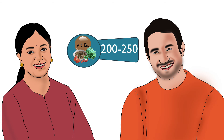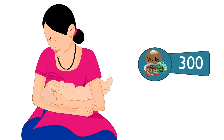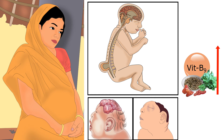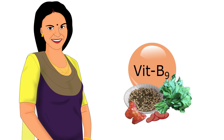For adult females and males, it is 200 to 250 micrograms. Pregnant women should have about 500 micrograms. For breastfeeding mothers, it is 300 micrograms. The requirements of folate are higher for women with a history of birth defects — they should take 500 micrograms before conception and throughout pregnancy. Adequate folate intake is also recommended for women who are planning pregnancy.